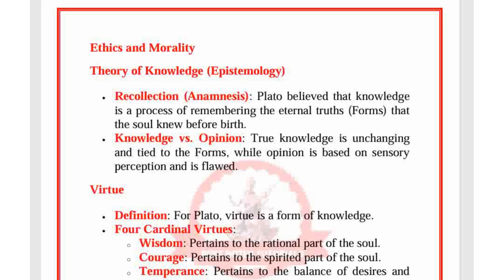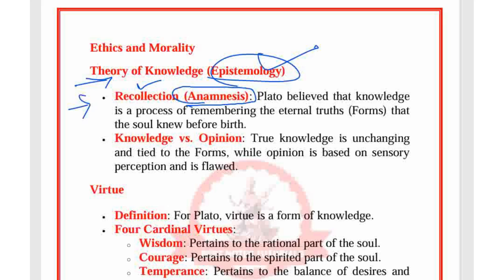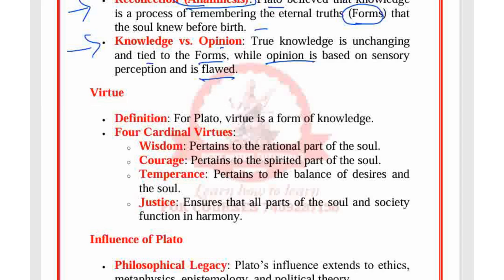In Plato's theory of knowledge — epistemology — he introduces the concept of recollection, anamnesis. Plato believed that knowledge is the process of remembering eternal truths that the soul knew before birth. True knowledge is unchanging and tied to the forms, while opinion is based on sensory perception and is therefore flawed.